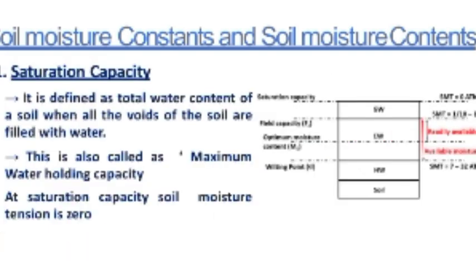Saturation capacity is the total water content of soil when all the voids of soil are filled with water. This is also called maximum water holding capacity. At saturation capacity, soil moisture tension is zero.